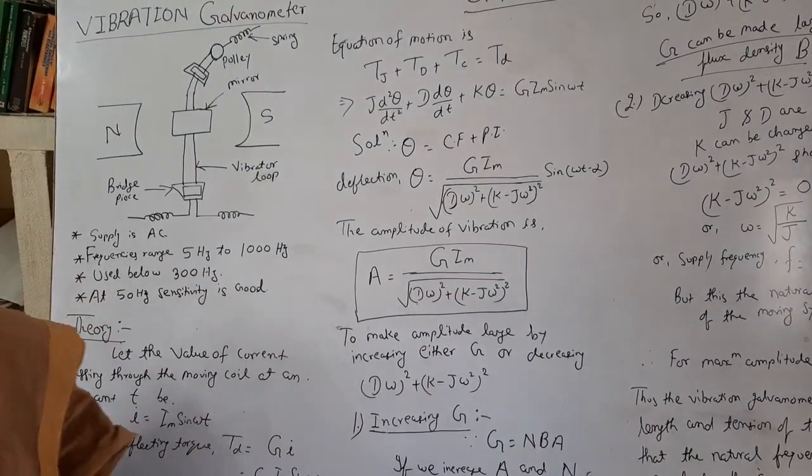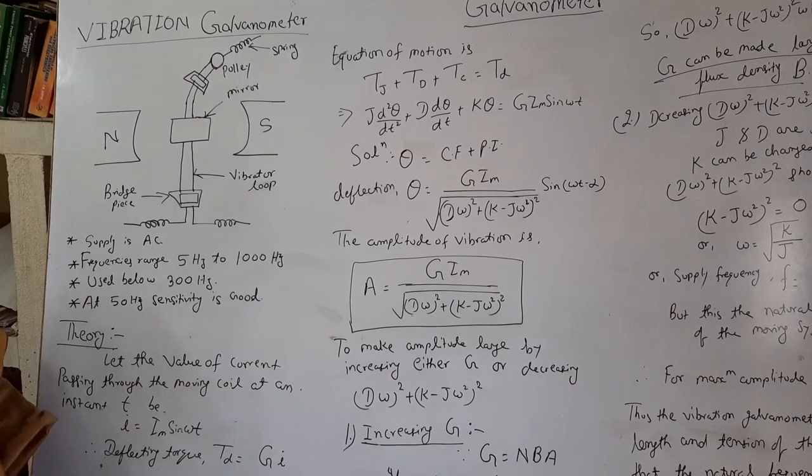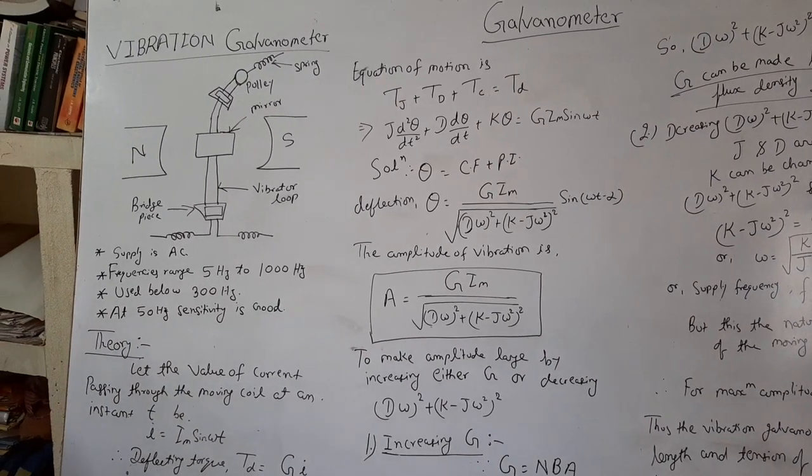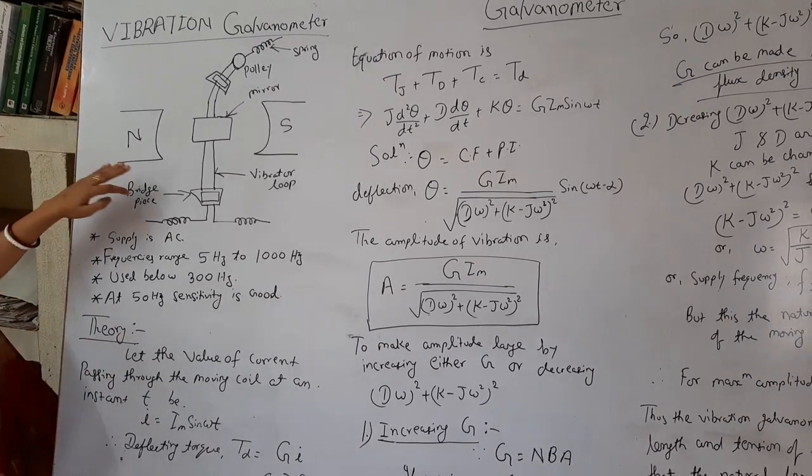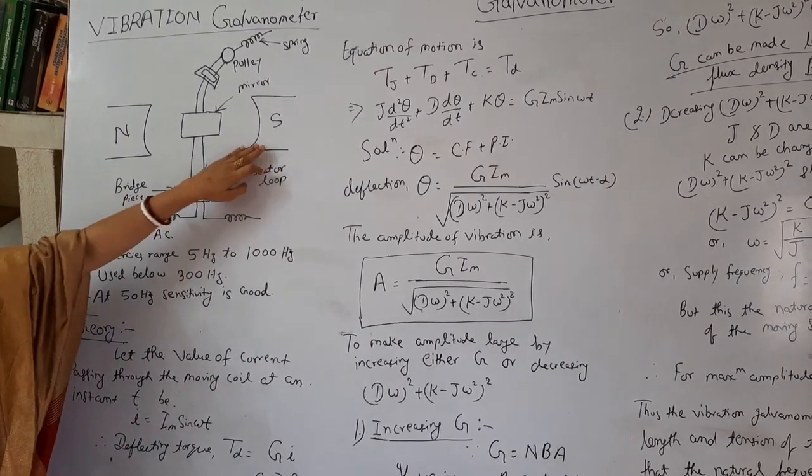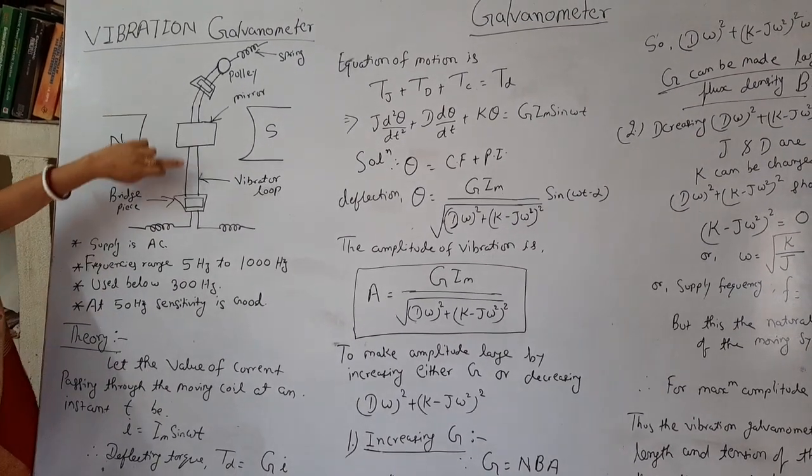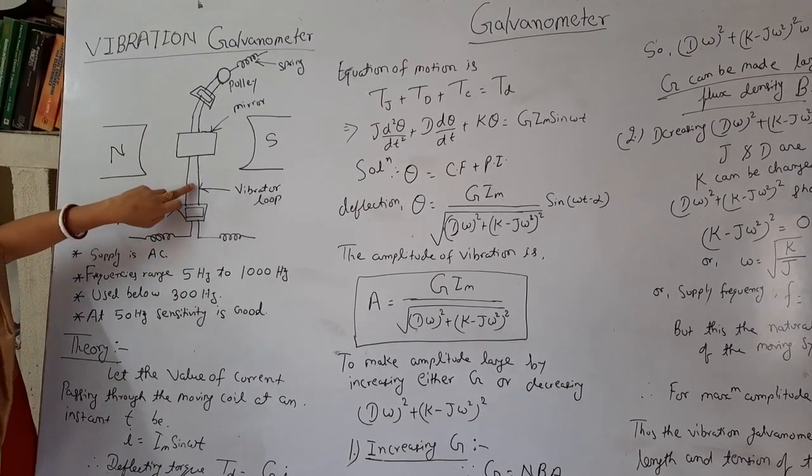So here we will study about the principle of the vibration galvanometer. First of all, see the construction of the vibration galvanometer, which has permanent magnetic poles and a breeze piece which is used for the vibration and it is a vibrator loop.